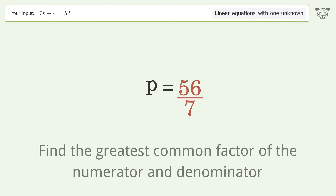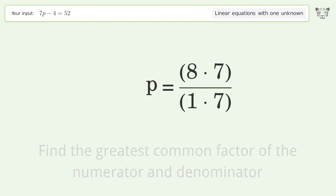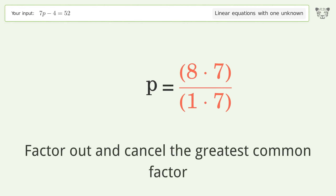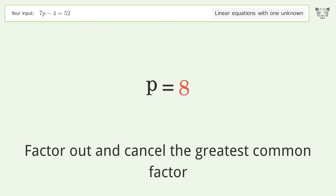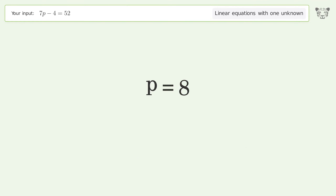Find the greatest common factor of the numerator and denominator. Factor out and cancel the greatest common factor. And so the final result is p equals 8.